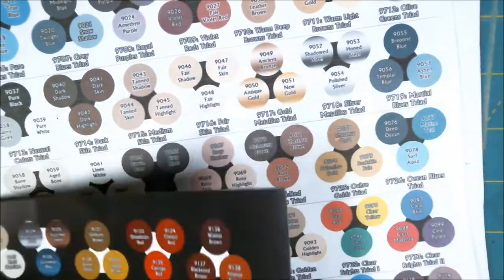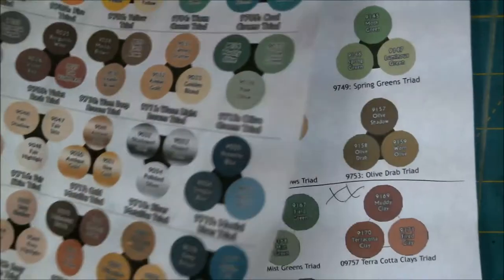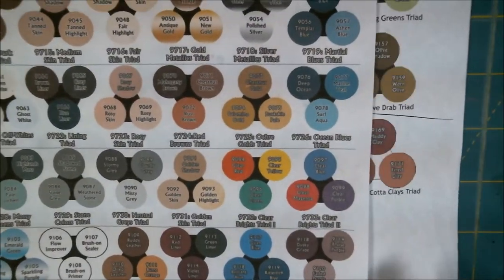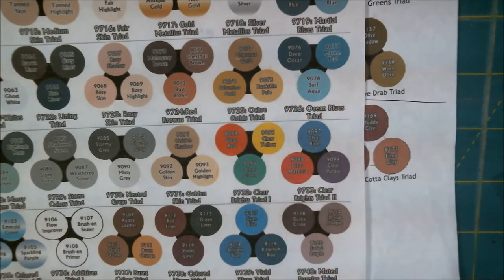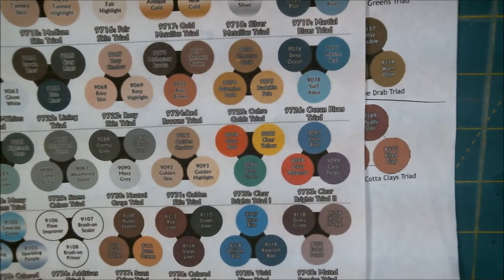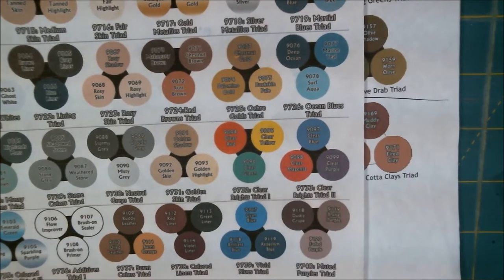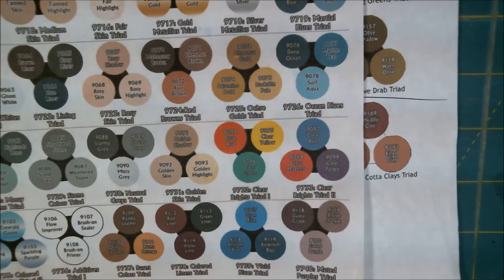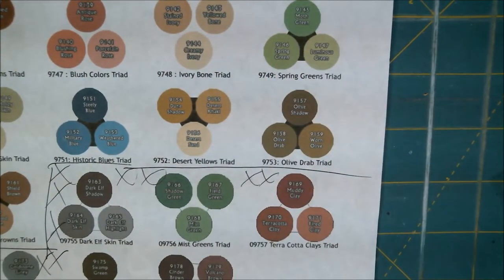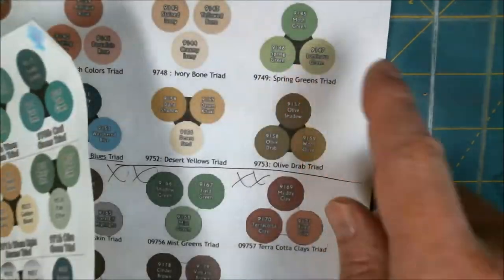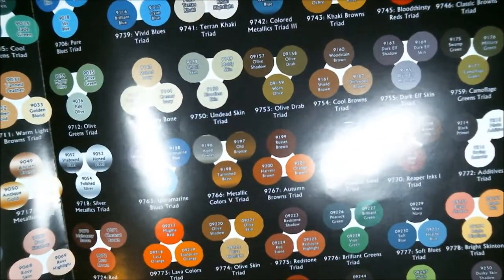The only problem with that is they don't have a couple of these on here anymore. Like the Liners Triad is gone, I think this muted purple is gone, and the greens are gone. So okay, I've got those paints, so I'm going to keep that. But at least I can use this for the new paints that I got.